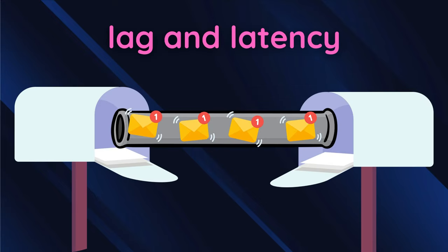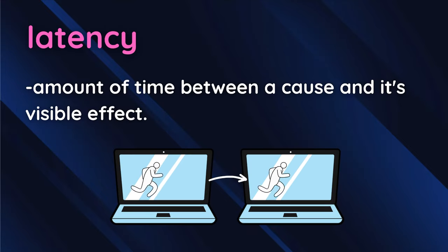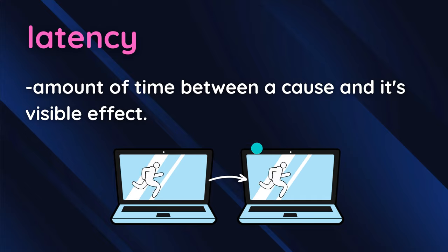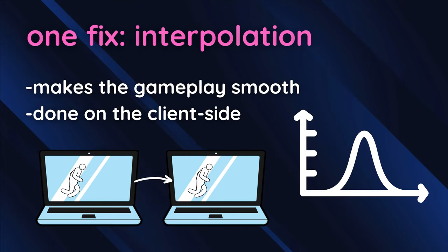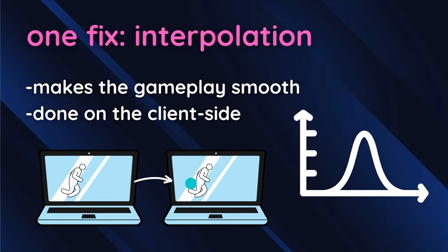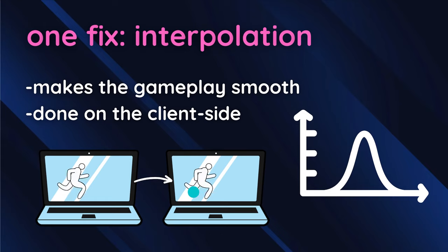Lag and latency are also important concepts. Latency is the amount of time between a cause and the visible effect — how long it takes to transmit information from one player to another. One possible fix is interpolation, which makes the game appear smoother by applying math functions like lerping on the client side. For example, if a server sends two position points, instead of teleporting the client between them, you smoothly interpolate from one location to another so movement looks smooth and there appears to be less lag.